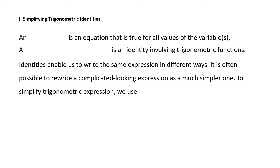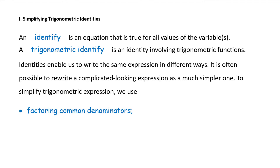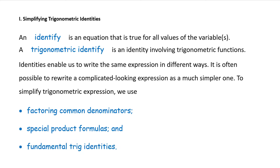Roman numeral one: simplifying trigonometric identities. An identity is an equation that is true for all values of the variables. A trigonometric identity is an identity involving trigonometric functions. Identities enable us to write the same expression in different ways. It is often possible to rewrite a complicated-looking expression as a much simpler one. To simplify trigonometric expressions we use factoring, common denominators, special product formulas, and fundamental trigonometric identities which you have memorized.